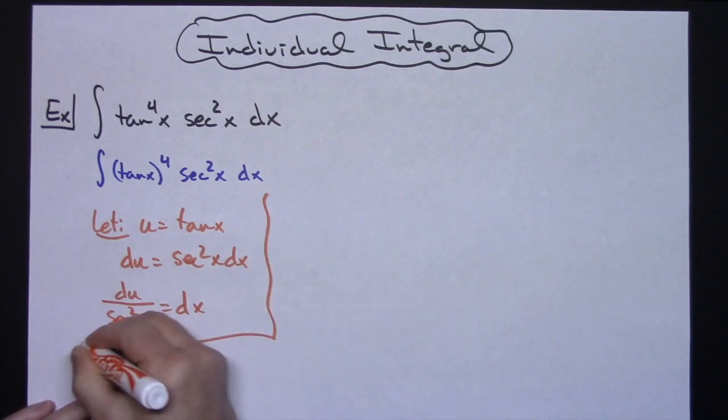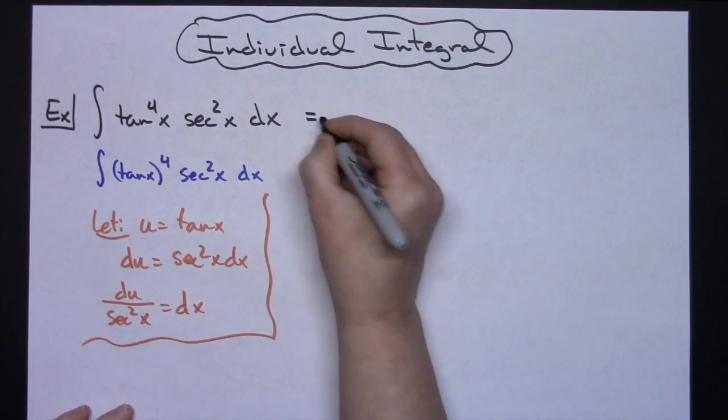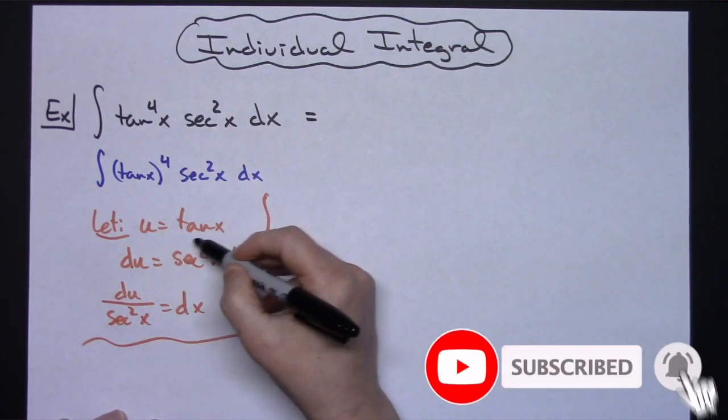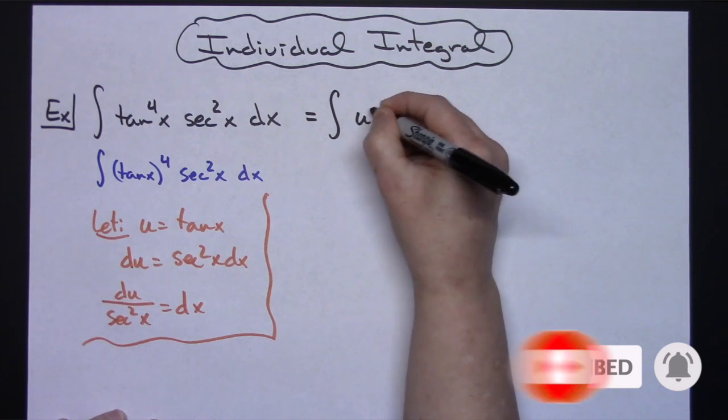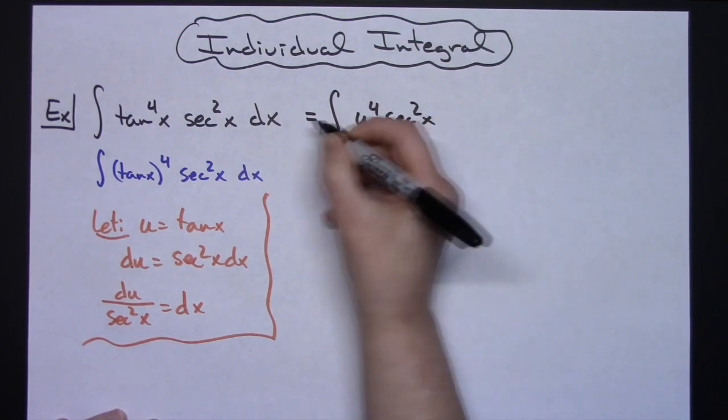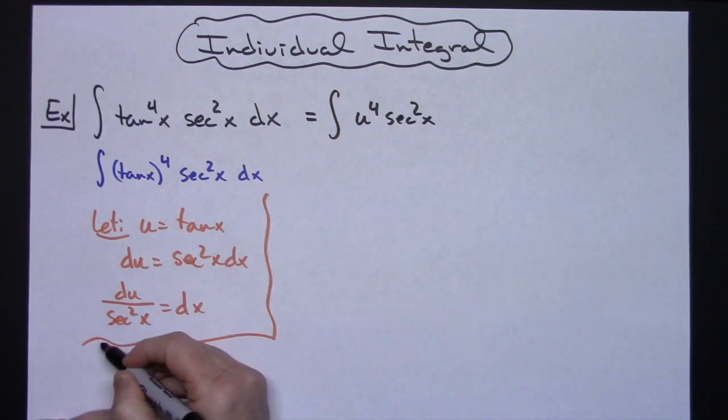That's going to allow me to do my substitution then. Now coming back up and substituting from that original problem, I let u be tangent, so I'm going to have u^4. I'm going to keep the sec^2(x), replacing dx there with what I said it is. I'll be multiplying by du over sec^2(x).